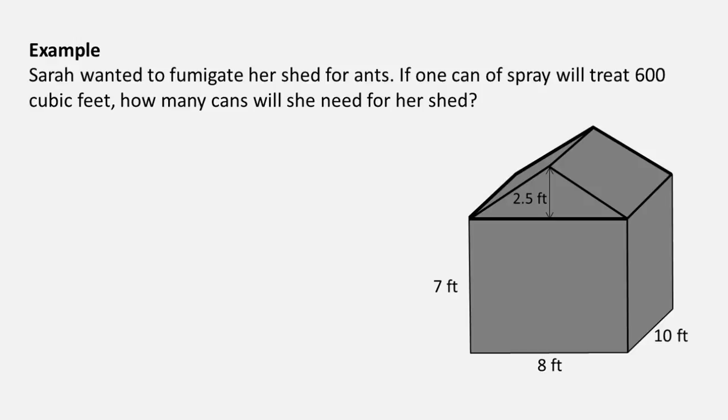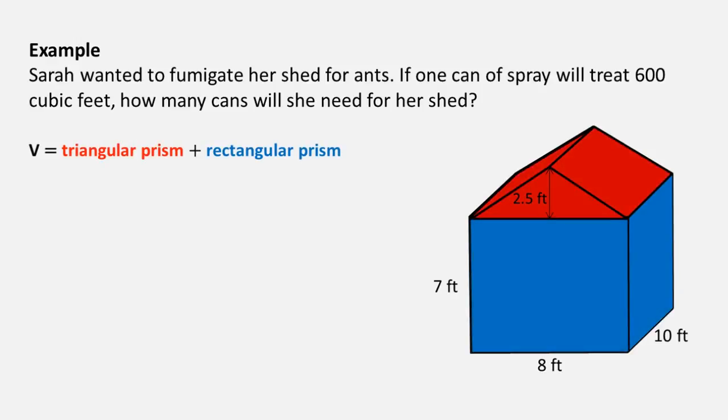Now let's identify the formulas for the shapes we just found. We will be adding these two shapes together. The triangular prism can be given as 1/2 b times a times h, and the rectangular prism can be given as l times w times h.